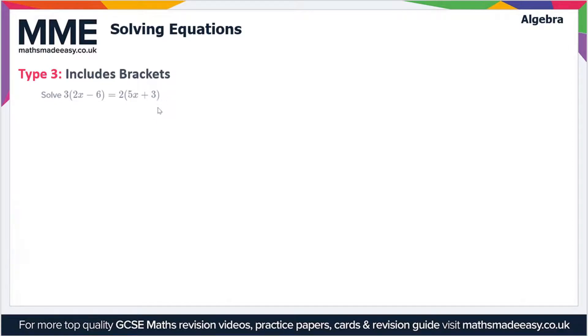So here we have to solve 3 lots of 2x minus 6, which is equal to 2 lots of 5x plus 3. Let's rewrite the expression first of all. So we've got 3 lots of 2x minus 6, and that's equal to 2 lots of 5x plus 3. Our goal when we're solving equations is to get the variable, which is x in this case, on its own.